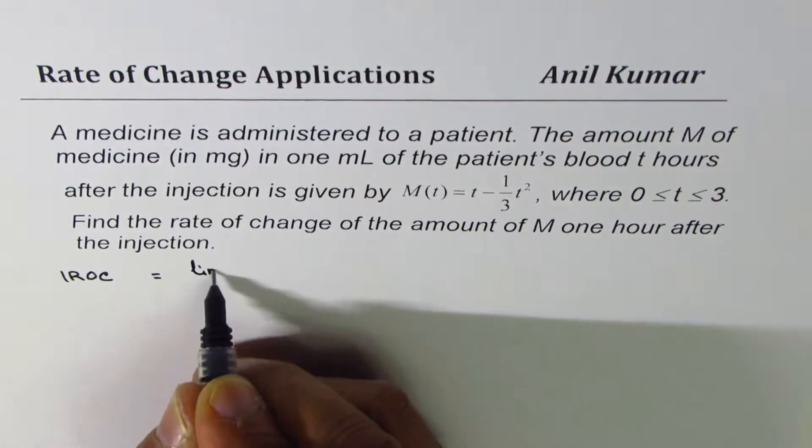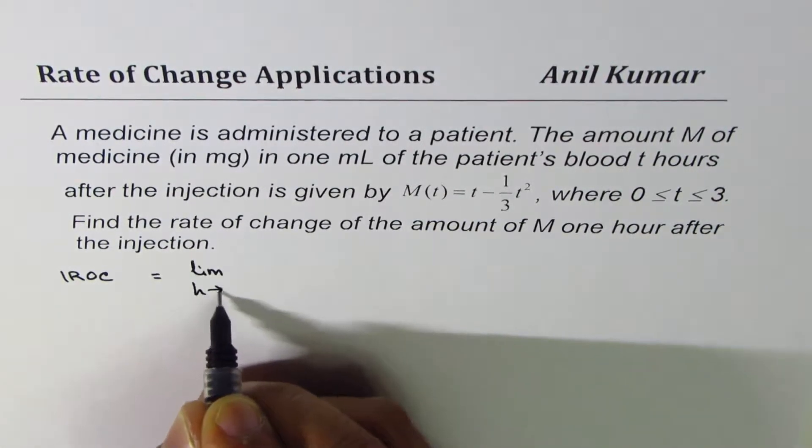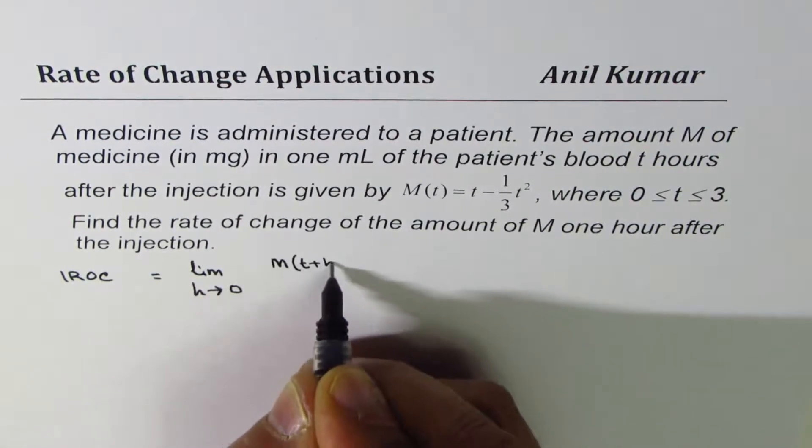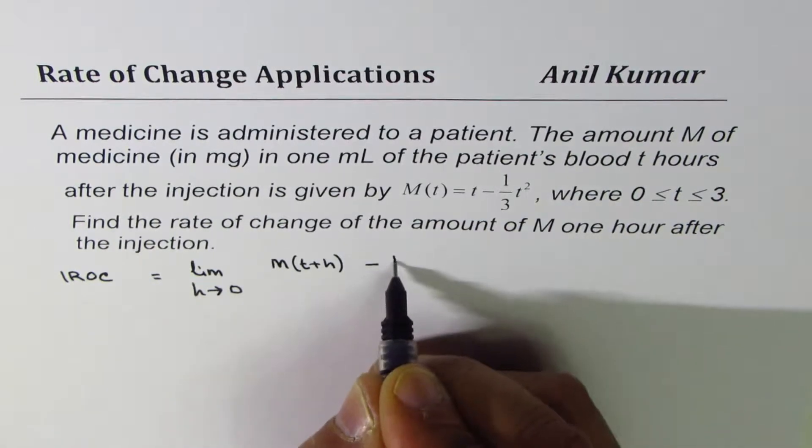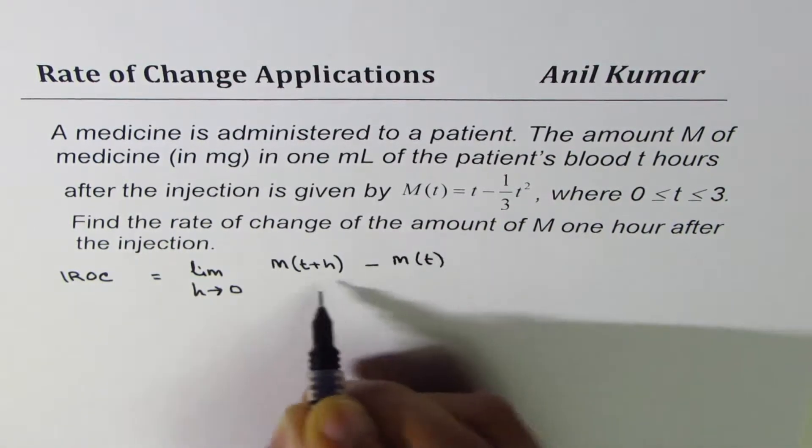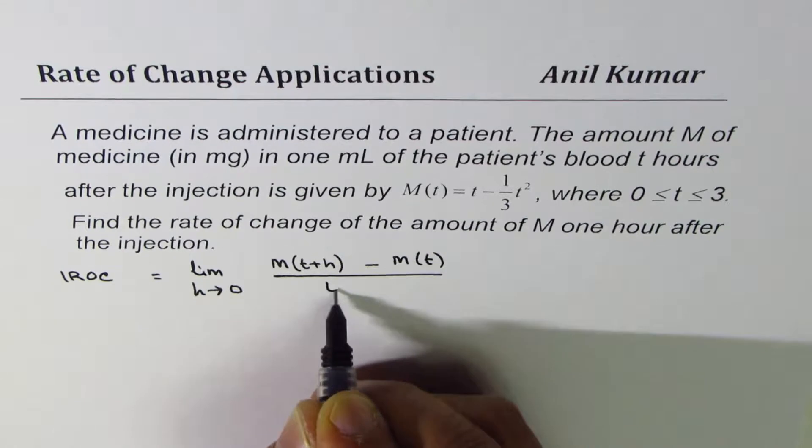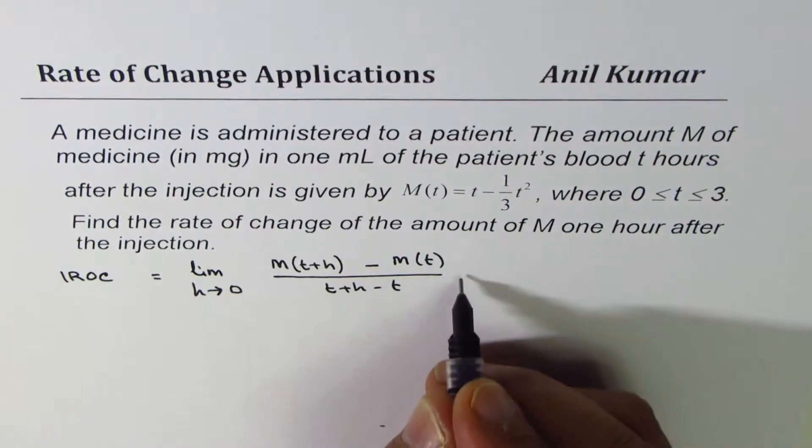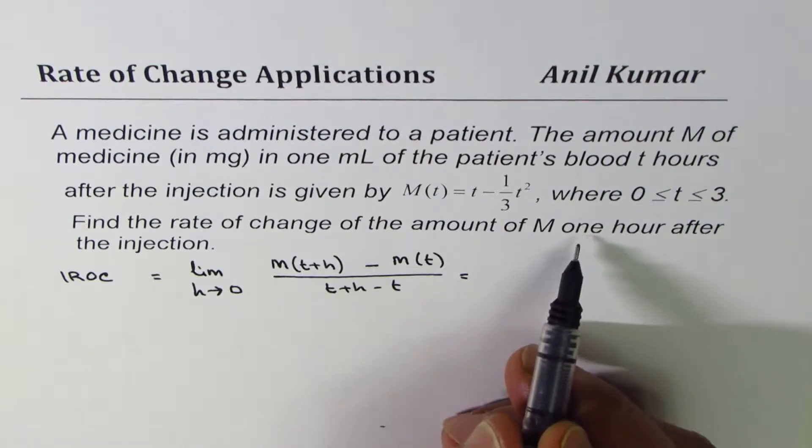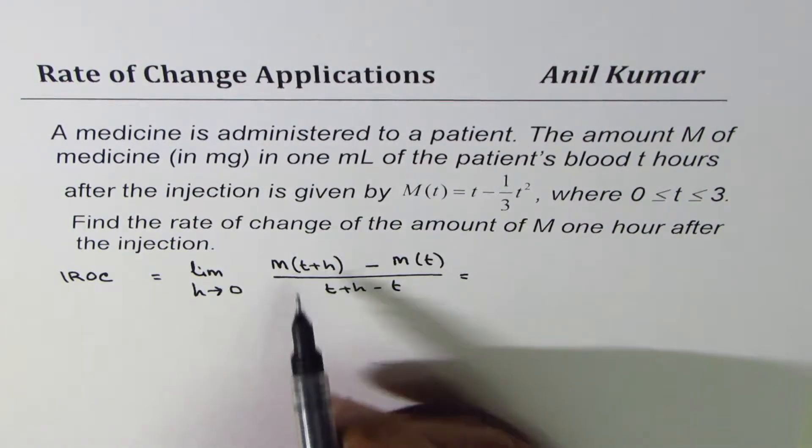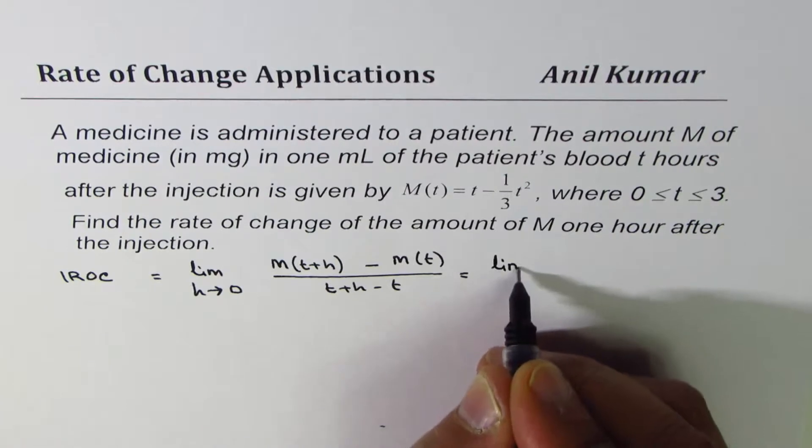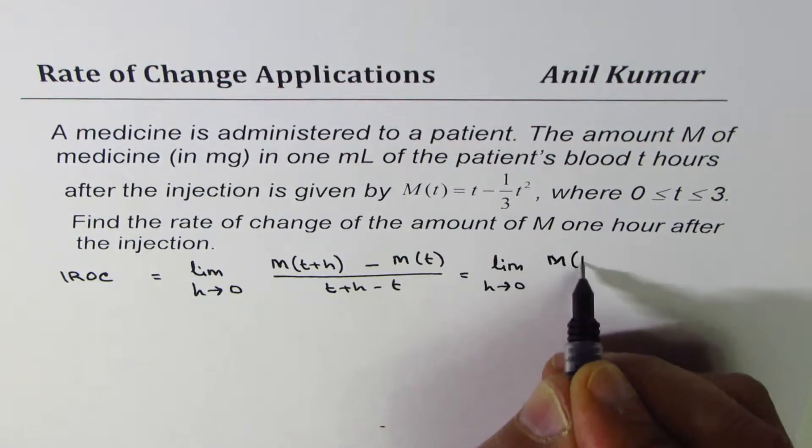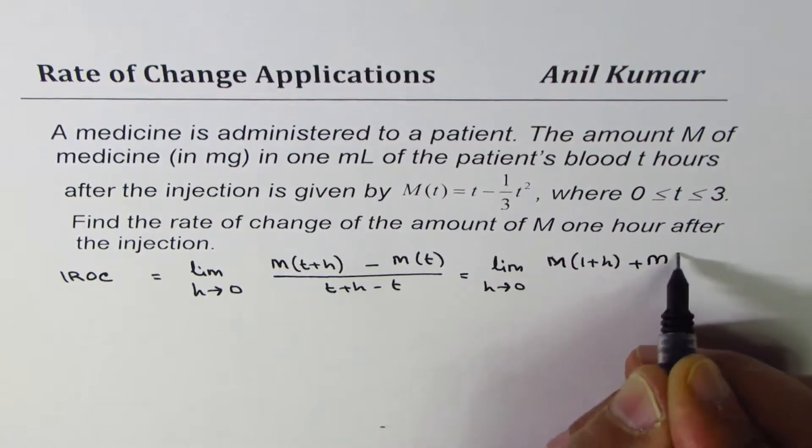Right, so that is in general. In our case we want after an hour, so that t is 1. So we can write this as limit h approaches 0, M(1+h) - M(1) divided by 1+h-1, which gives us h.